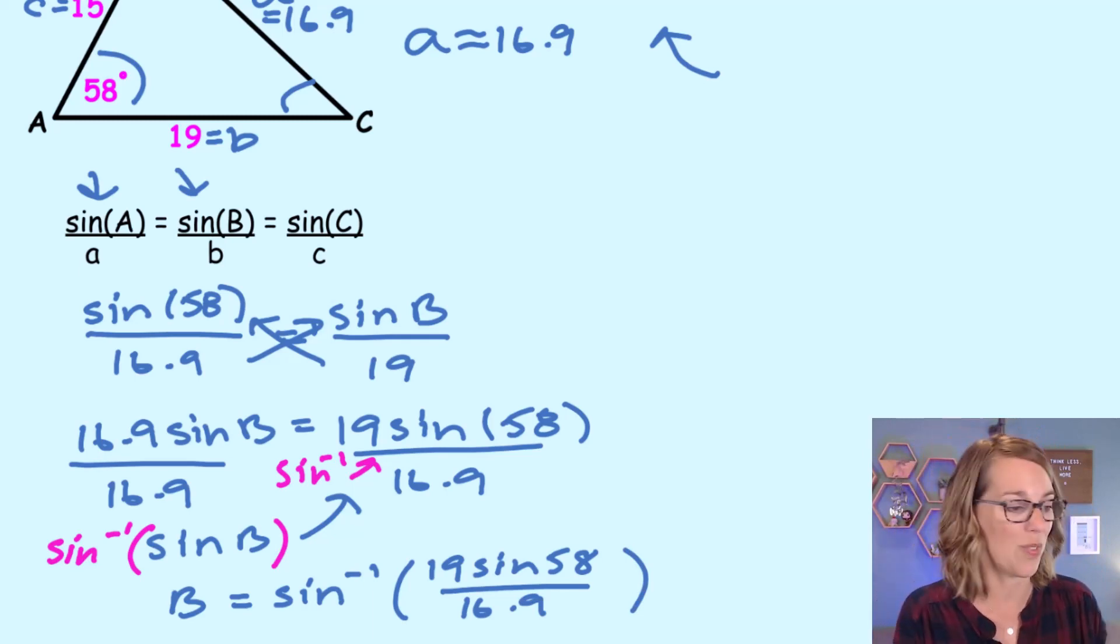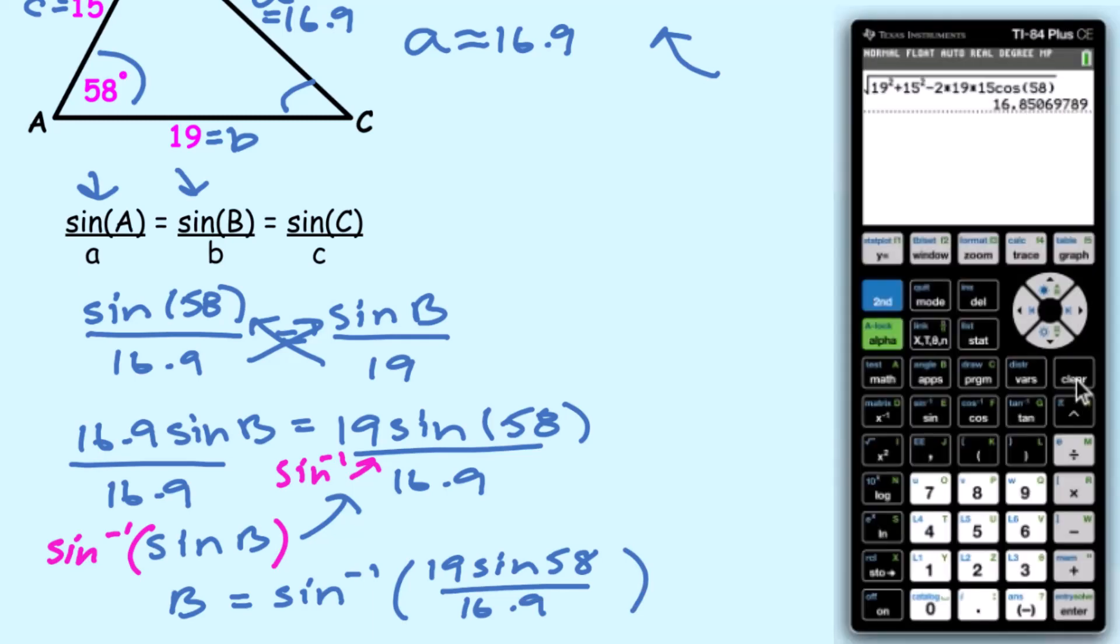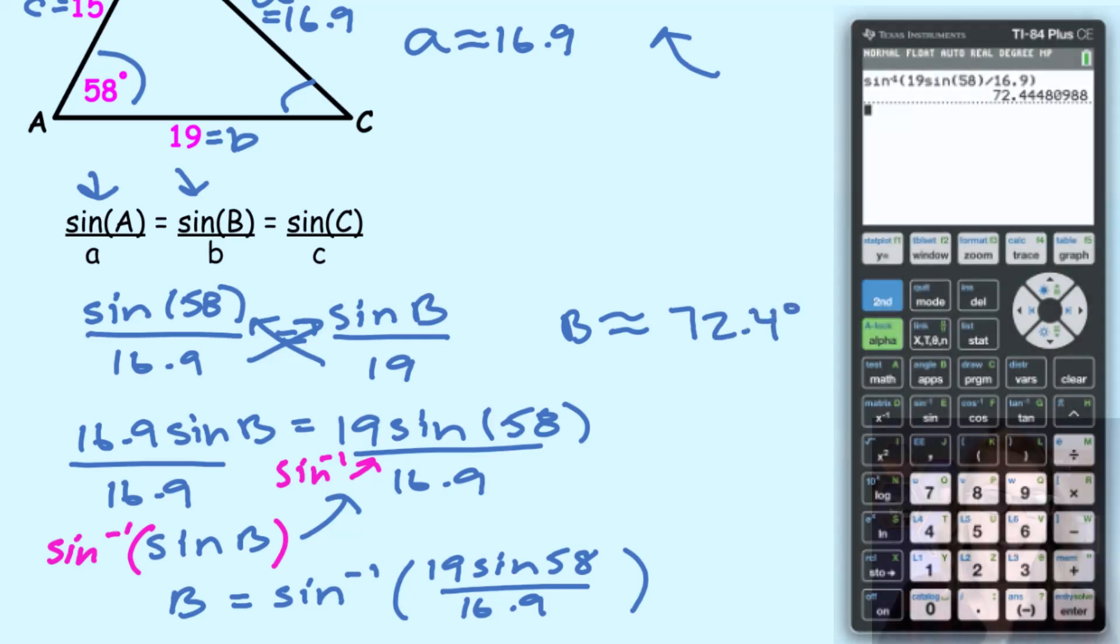I can go ahead and put it into my calculator. So into my calculator, I'm going to type sine inverse. So that's the second of sine. And then inside those parentheses, I've got 19 times the sine of 58 degrees. Let's close the parentheses for the 58 degrees and then divided by 16.9. Close my parentheses, enter, and I get 72.44. So let's go ahead and say that angle B is approximately 72.44. We'll call that 72.4 degrees.